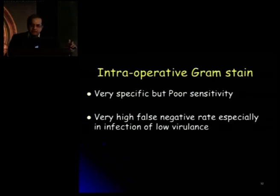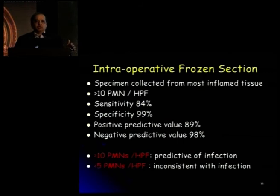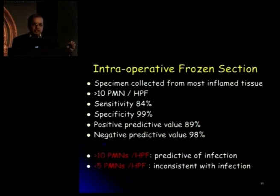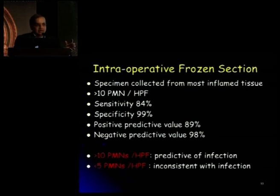Otherwise, we are looking at older ways of diagnosing, like intraoperative Gram staining, which is very specific but has very poor sensitivity and high false negative rates, especially with organisms of low virulence. Intraoperative frozen sections have also been popular, but you need a good pathologist. Specimens are collected from the most inflamed tissue during surgery — usually the synovium, from 3 to 5 sites. Under high-power microscopy, you look for polymorphonuclear cells. More than 10 PMNs per high power field is certainly more predictive for infection; less than 5 is inconsistent with infection. The gray area is 5 to 10 PMNs per high power field, which again depends on the pathologist and clinical perception.